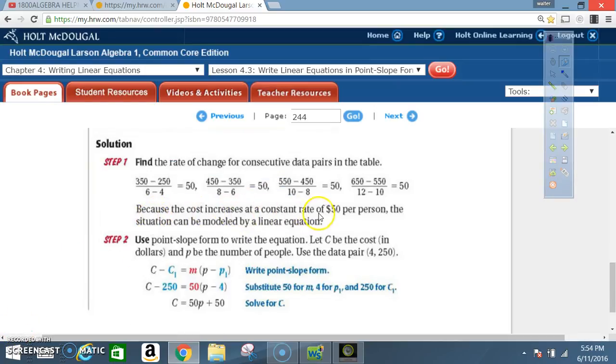Because the cost increases at a constant rate of $50 per person, the situation can be modeled by a linear equation. Step 2, use point-slope form to write the equation. Let C be the cost in dollars. Once again, let C be the cost in dollars, and P be the number of people. Use the data pair 4 and 250. So, we get C minus C1 is equal to M times P minus P1. That's point-slope form. All right, so now, our X value is 4. Our Y value is 250. Or, the P sub 1 value is 4. And the C sub 1 value is 250. So, we substitute 50 for M, 4 for P sub 1, and 250 for C sub 1.